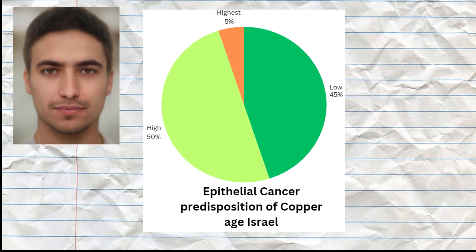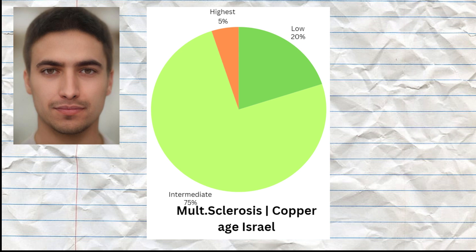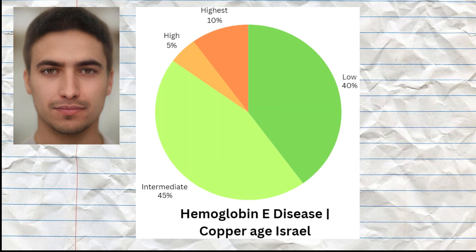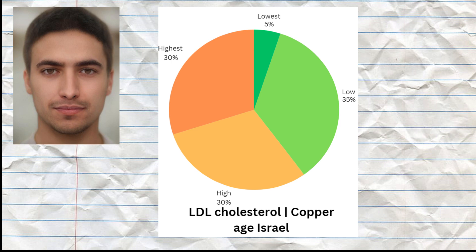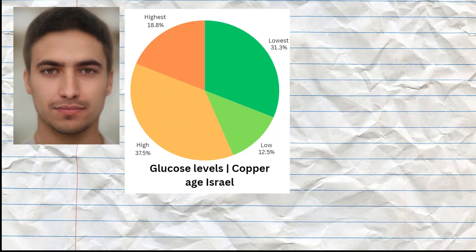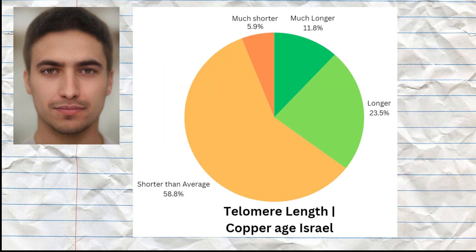They had a predisposition to higher odds of epithelial cancer. They also had a predisposition to lower odds of autoimmune disease based on HLA genotype, and lower odds of multiple sclerosis, average odds of type 1 diabetes, but slightly elevated odds of rheumatoid arthritis. They had low genetic predisposition to hemoglobin E disease and average levels of LDL cholesterol. They had predispositions to higher levels of vitamin D, higher glucose levels, and lower odds of obesity, which overall predisposes them to average odds of various metabolic conditions like type 2 diabetes. Regarding telomere lengths, they were predisposed to slightly shorter telomere lengths and shorter lifespans.